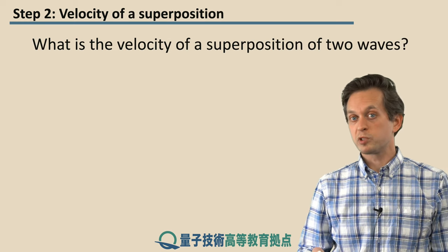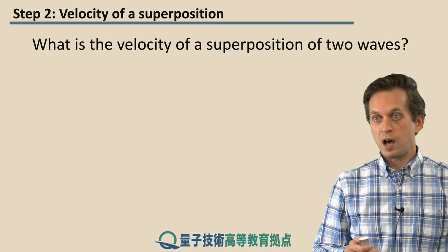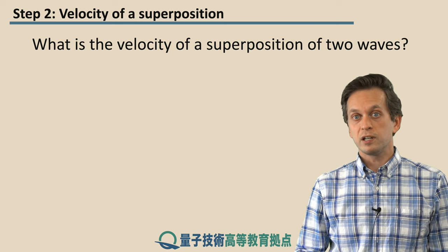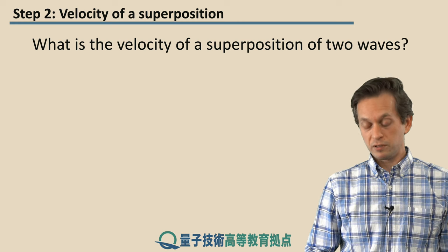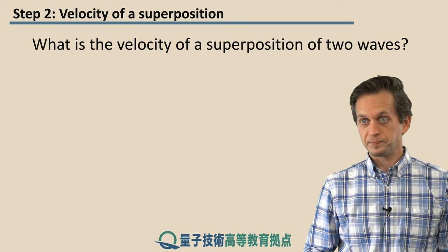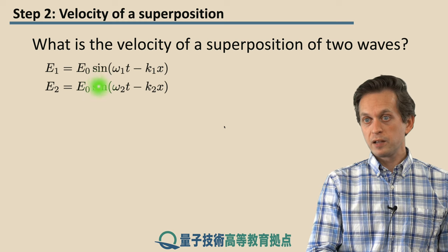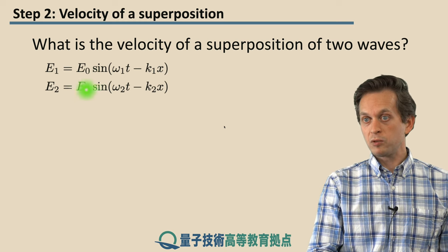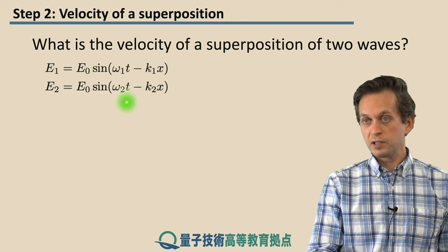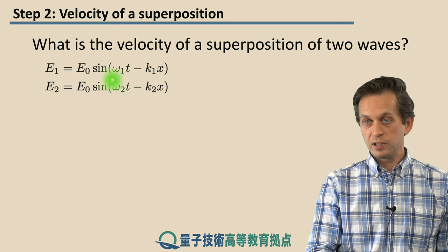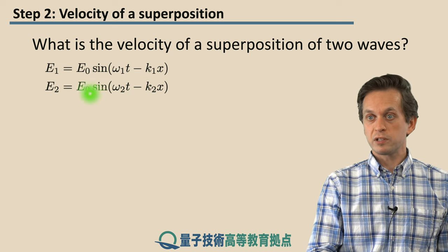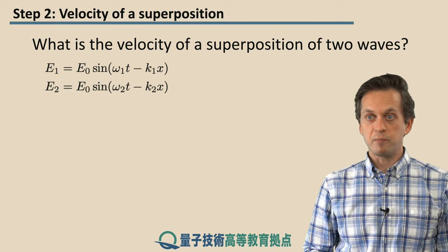So now, what happens when we superpose two waves? At what velocity and at what speed does the resultant superposition travel? Well, let's take two waves, and this time, we allow their angular frequencies to be different, their wave numbers to be different. But for simplicity, we consider these two waves to have same amplitude, E0.